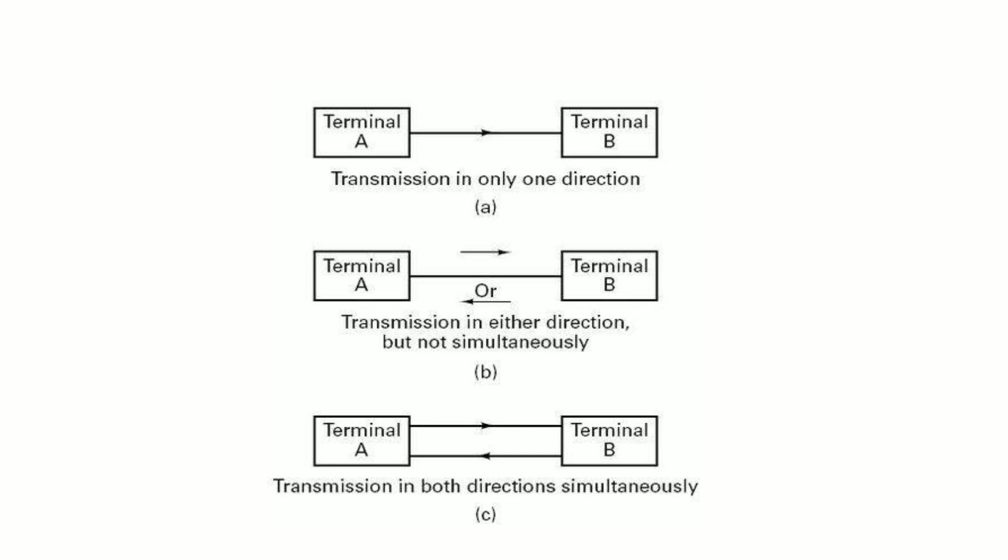In full duplex mode of transmission, data can be transmitted in both directions simultaneously, but the transmission must be between the same stations. Full duplex lines are also called two-way simultaneous, duplex, or both-way lines. A local telephone call is an example of full duplex transmission mode.